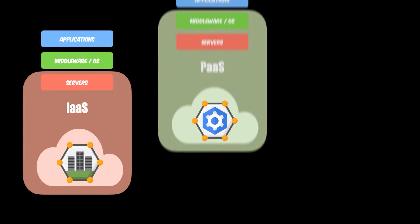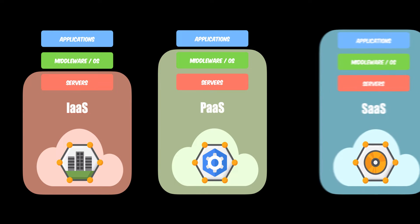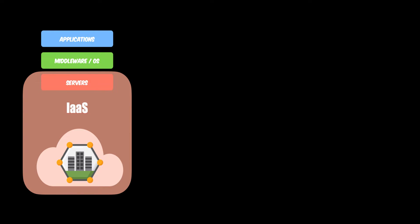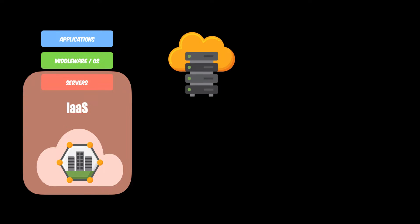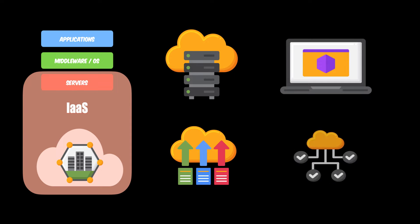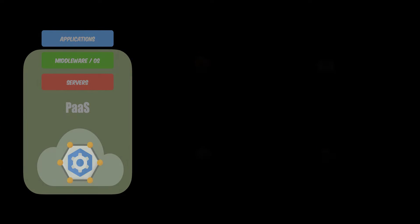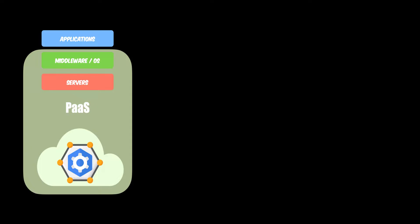Infrastructure as a service is the fundamental category of cloud computing services, offering infrastructure like servers, virtual machines, storage, networks, and so on. Platform as a service refers to on-demand environments for application development, testing, and delivery, without setting up and managing the underlying infrastructure.